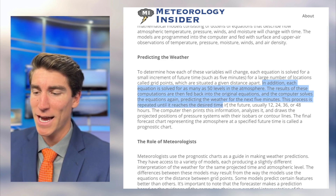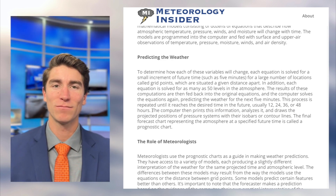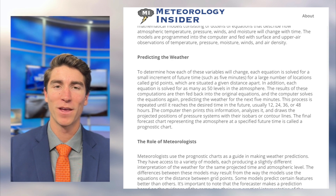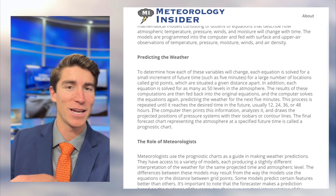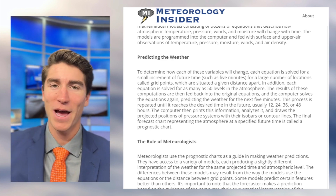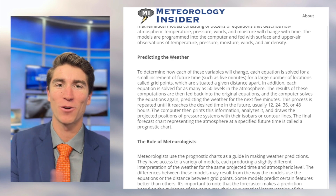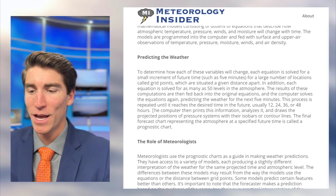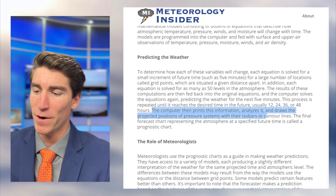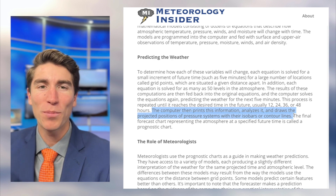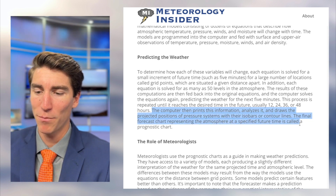The results are fed back into the original equations and the computer solves them again, predicting the weather for the next five minutes. This process is repeated until it reaches the desired time in the future — usually 12, 24, 36, or 48 hours. You put observations into your equations, figure out what the atmosphere is doing right now, increment it forward, solve again, get your forecast, and keep doing that until you've gone as far as you want. It gets worse the farther you go out, because any mistake at the beginning ripples over time — almost like the butterfly effect. The final forecast chart is called a prognostic chart.